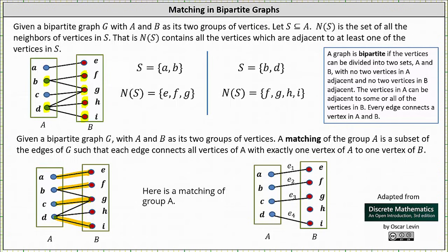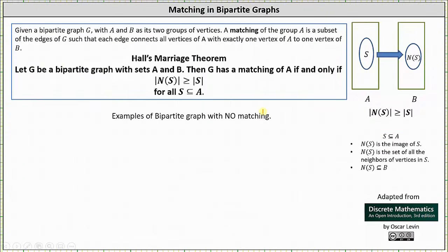Now let's talk about Hall's Marriage Theorem, which will help us determine whether a graph has a matching of A or does not have a matching of A. Hall's Marriage Theorem states: if G is a bipartite graph with sets A and B, then G has a matching of A if and only if the cardinality of N(S) — the number of vertices in the set of neighbors of S — is greater than or equal to the cardinality of S, the number of vertices in set S, where S is a subset of set A.